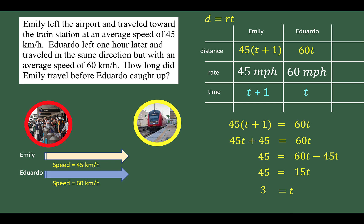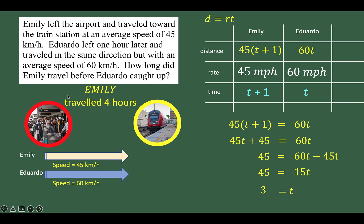Now we should be careful here. Many students would just stop and say the answer is 3 — that is wrong. Going back to the question, it asks how long did Emily travel before Eduardo caught up. We are after Emily's time, which is represented as t plus 1, not t. So Emily's time is t plus 1, which equals 3 plus 1, giving us 4 hours. After Emily traveled 4 hours and Eduardo traveled 3 hours, both would have traveled equal distances.